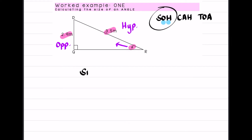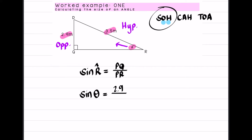I'm going to start by writing out my formula. Sin of the angle — in this case angle r — is equal to the opposite, which is PQ, over the hypotenuse, which is PR. Now instead of r having a numerical value, I'm going to put theta. So sin theta is equal to PQ, which is 2.9, over PR, which is 3.5.